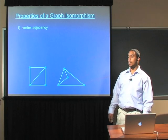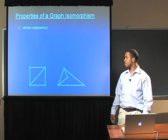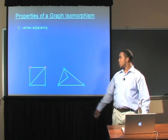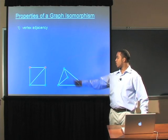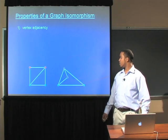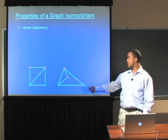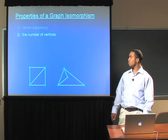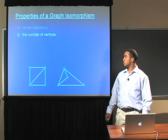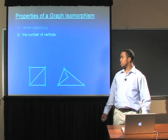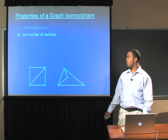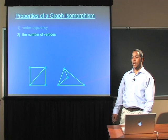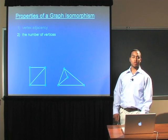One, vertex adjacency. You have two adjacent vertices on the left as well as two adjacent vertices on the right. Two, the number of vertices. You have four vertices on the left and four vertices on the right.